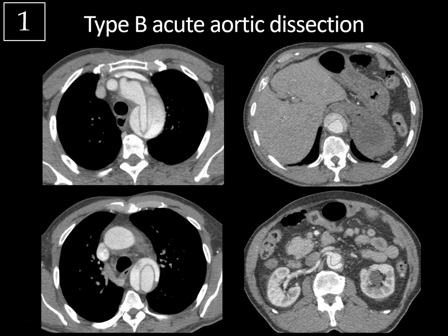Type B aortic dissections account for about 40% of dissections. Originally they were classified as occurring distal to the left subclavian artery, but in 2014 a report published in the journal Radiology suggested reclassification of type B to include dissections involving the arch but distal to the brachiocephalic artery. Type B dissections tend to be treated medically with control of hypertension.